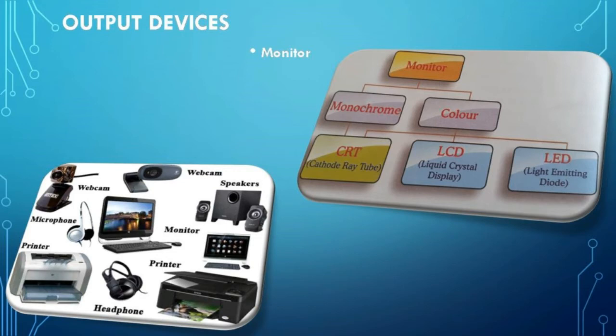Output Devices. The output devices help us to see the final result. Any device that outputs information from a computer is called an output device. Examples of output devices include monitor, printer, speaker, plotter, projector and headphone. But the most commonly used output devices are monitors, speakers and printers.